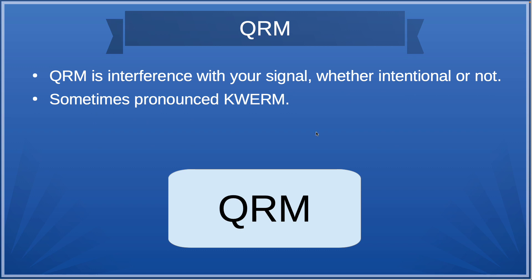QRM is interference with your signal, whether that's intentional or not. Sometimes it's pronounced "quirm." QRM could be anything — it could be an adjacent signal, especially on a contest weekend when the band is packed and it's hard to maintain three kilohertz of separation. It could be someone intentionally causing you interference. It could even be your neighbor setting up an electric fence or a new solar array — a bad charge controller can cause a lot of QRM.